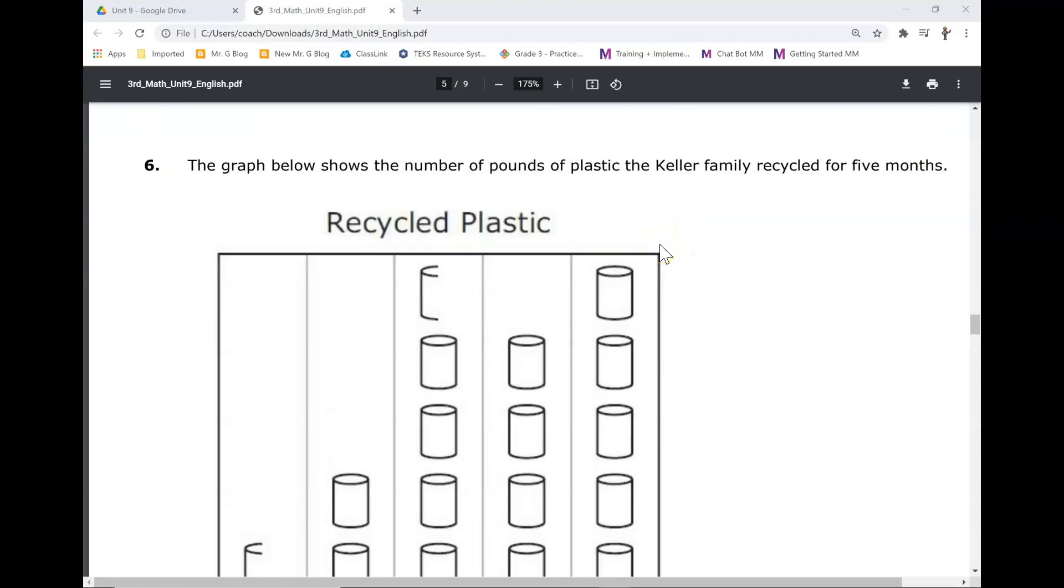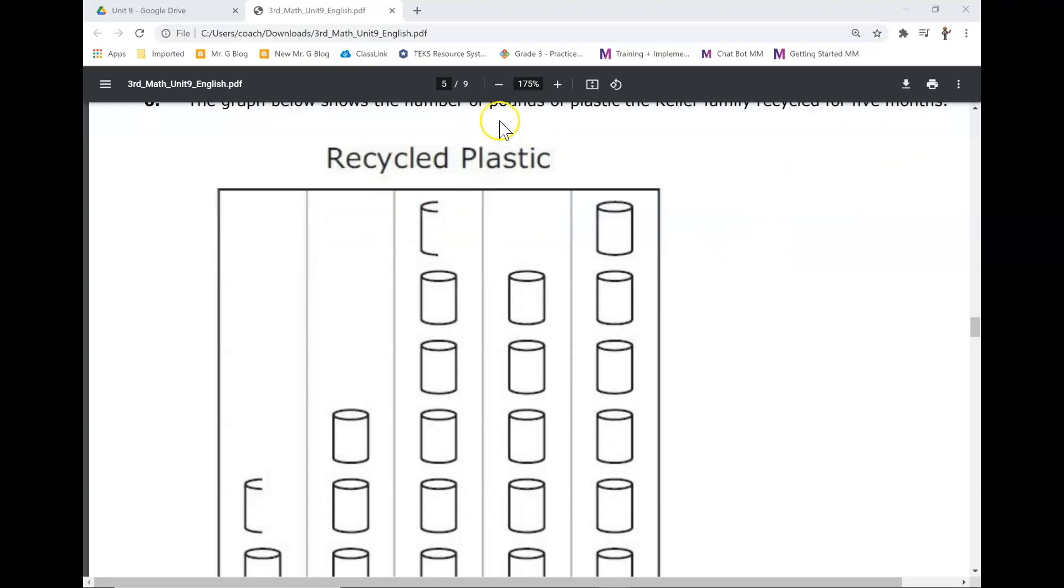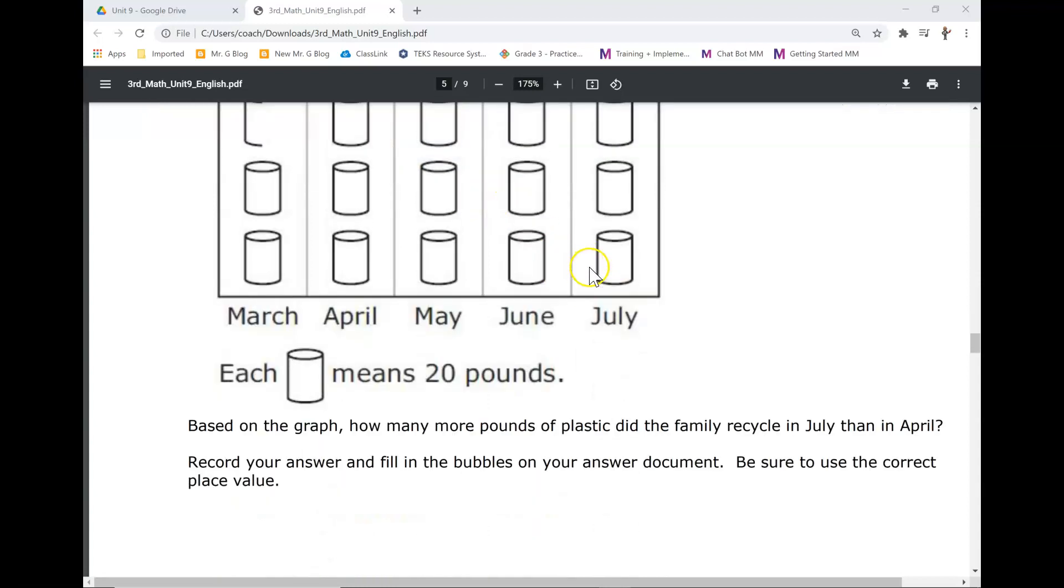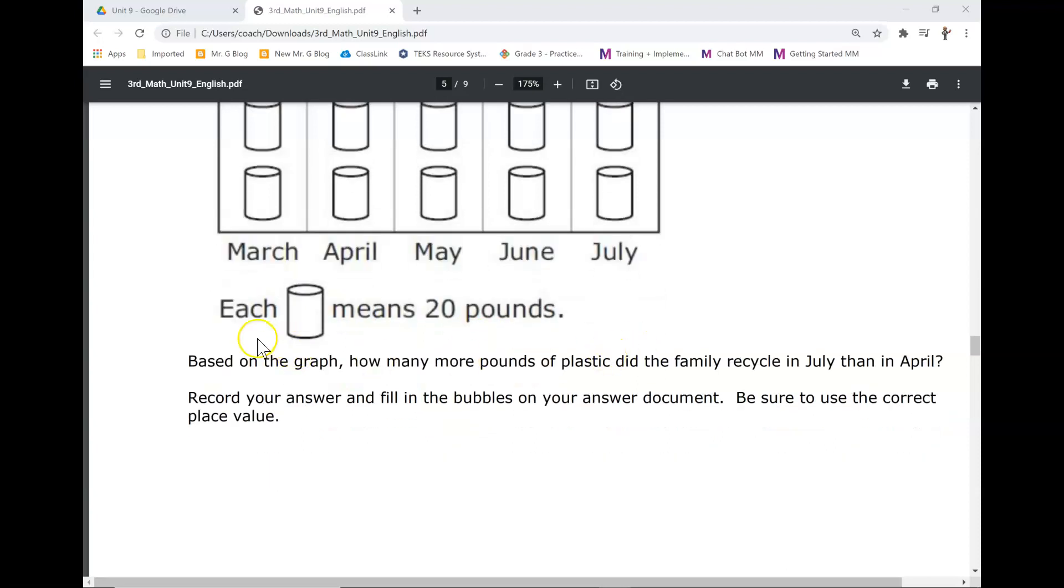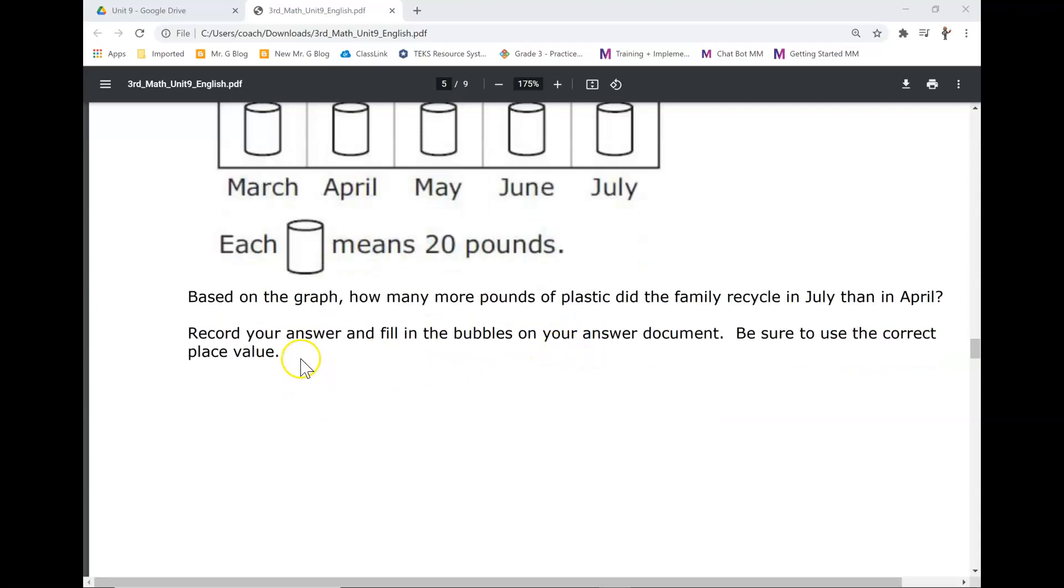Number six. The graph below shows the number of pounds of plastic the Keller family recycled for five months. Recycled plastic. March, April, May, June, July. Each cylinder means 20 pounds. Based on the graph, how many more pounds of plastic did the family recycle in July than in April? Record your answer and fill in the bubbles on your answer document. Be sure to use the correct place value.